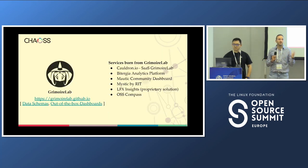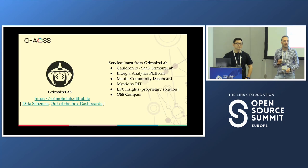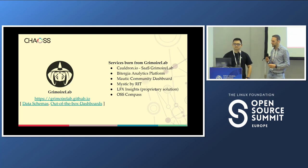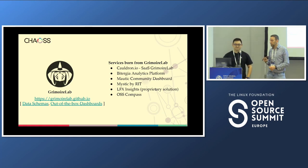All the technology is running on top of OpenSearch, another open source project by Amazon Web Services — it used to be Elasticsearch but they decided to change the license, so it's no longer open source. Services born from GrimoreLab: Caldron.io is a SaaS service run by Bitergia. Bitergia Analytics is another tool covered by ISO standards for quality and security, to provide services to large corporations. There's also Mighty Community, Mystic by Rochester Institute of Technology, and LFX Insights by the Linux Foundation — initially built on GrimoreLab, they evolved the technology but were inspired by CHAOSS technology. And finally, OSS Compass.